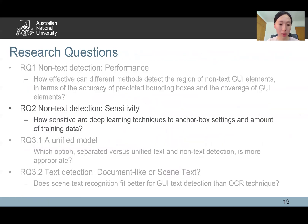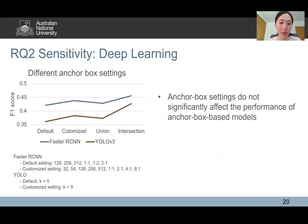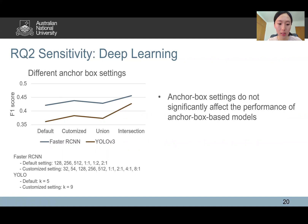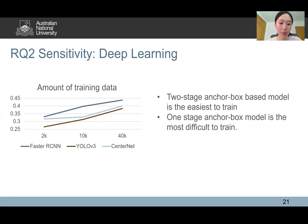Research question three: how sensitive are deep learning techniques to anchor-box settings and amount of training data? We test four types of anchor-box settings: default (from COCO), customized (drawn from our dataset distribution), union, and intersection of the two. We find that anchor-box setting does not significantly affect performance of anchor-box-based models. In terms of training data, the two-stage anchor-box-based model is the easiest to train, while the one-stage anchor-box model is the most difficult.